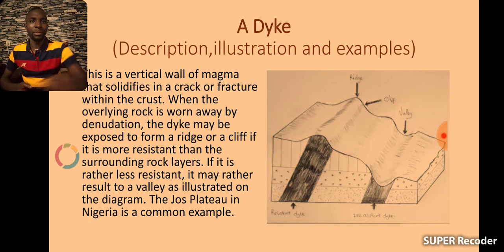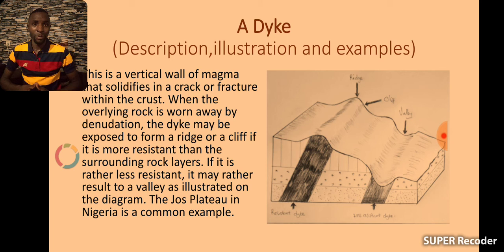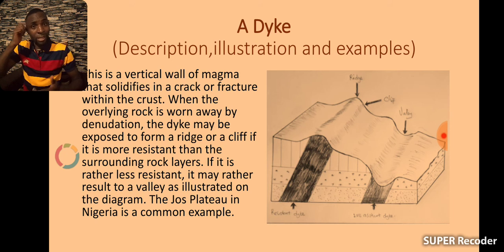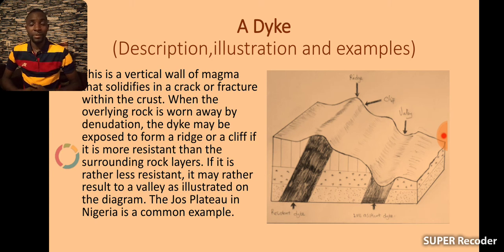We will begin with the first feature, which is a dike. A dike is a vertical wall of magma which is formed from the solidification of magma within cracks, fractures, or fissures of the crust. When the overlying rock of a dike is worn out due to denudational processes, the dike may be exposed to form a ridge or a cliff if the dike is more resistant than the surrounding rock layers. If the dike is less resistant, it might result in a valley being formed in that area.